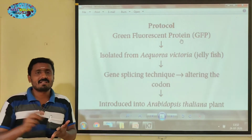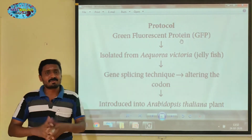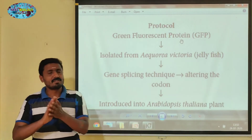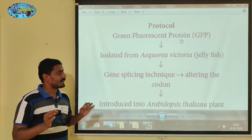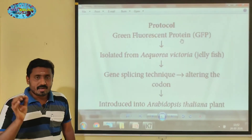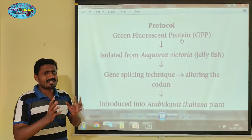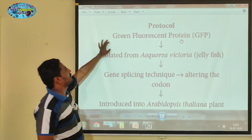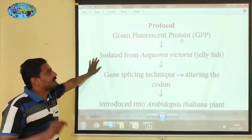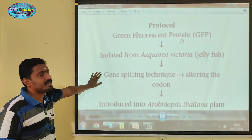Using guinea pigs, you can check biosensors, which makes it easy to express that character. If you have a plant — for example, the plant called Arabidopsis thaliana — we will use the GFP to produce the gene. If you want to introduce it, we will use the gene transfer method. The gene is isolated from Aequorea victoria.